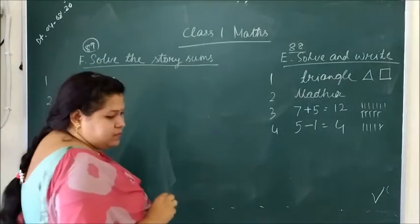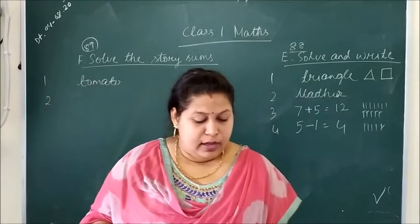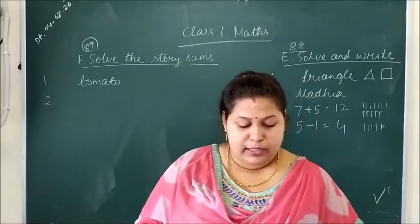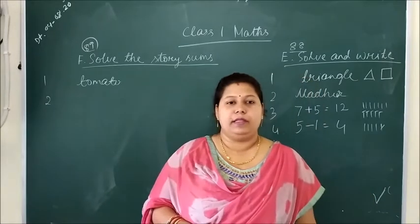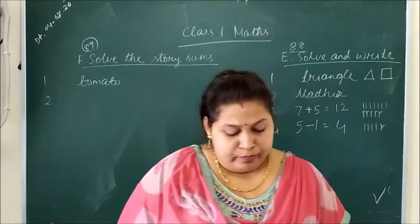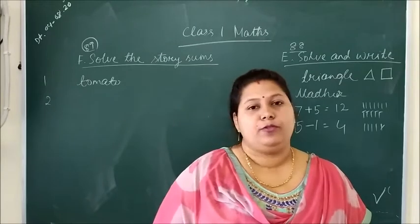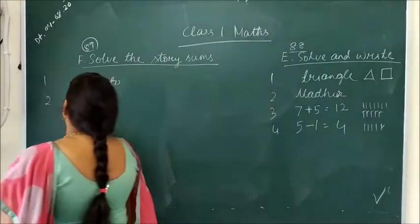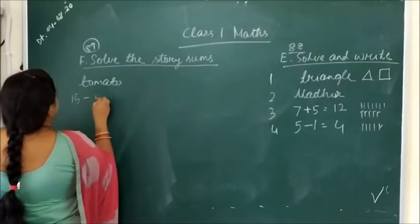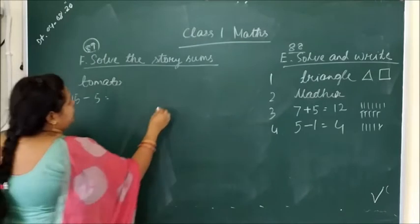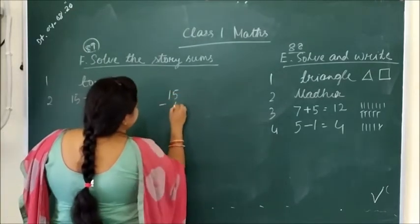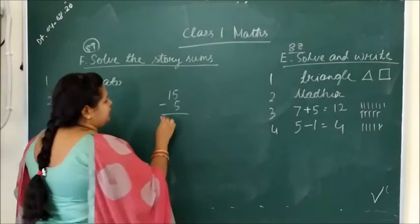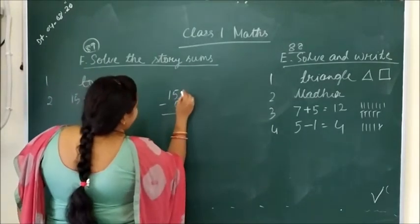Question number 2. There were 15 brinjals. 5 of them were sold. How many are left? There were 15 brinjals and 5 were sold. So how many are left? There were 15 and 5 were sold. So here look, 15 minus 5. Sold means cut, removed. This means minus, you have to subtract from 15.